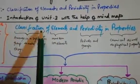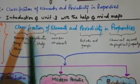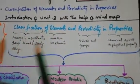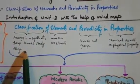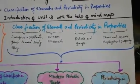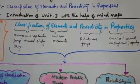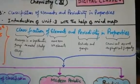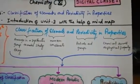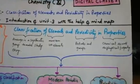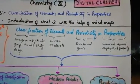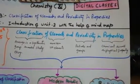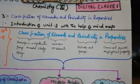Let's start. This chapter is Classification of Elements and Periodicity in Properties. First, let's understand the meaning: 'classification' means to arrange things in a systematic group to make study easy. For example, in a shop you can see that all biscuits are kept in one place, all chips in one place, all juices in one place — everything is organized so it is not mixed up.